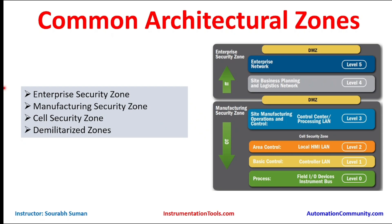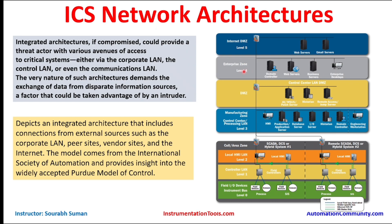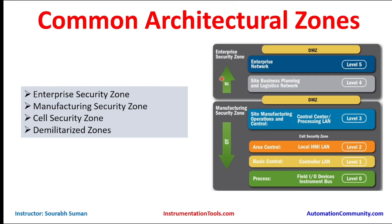There are four zones. The enterprise security zone includes connectivity to the internet, peer locations, and backup for remote off-site facilities. It encompasses business networks including corporate communications, email servers, domain name systems, and IT business systems — Levels 4 and 5. Level 4 includes domain controllers and web servers. This zone has a wide variety of risks and is considered untrusted because it is connected to external networks.